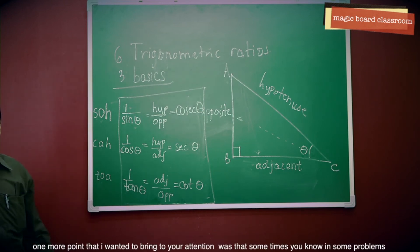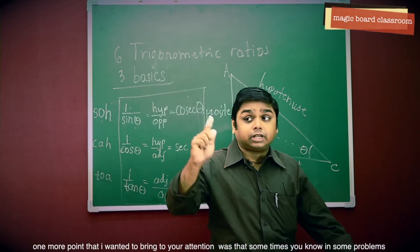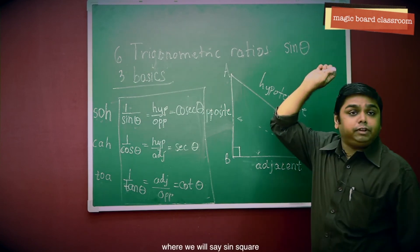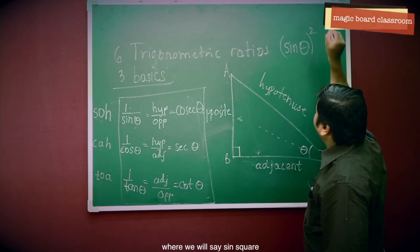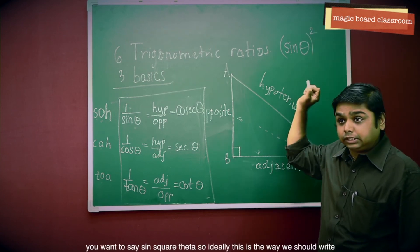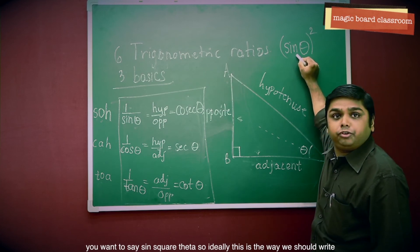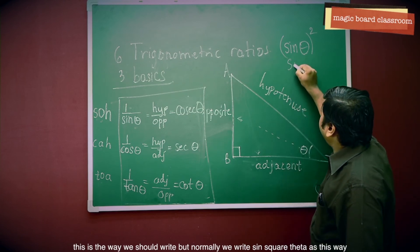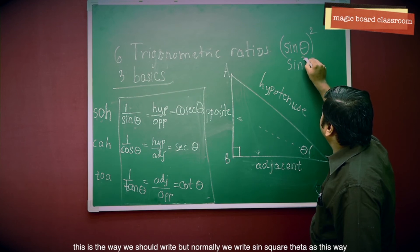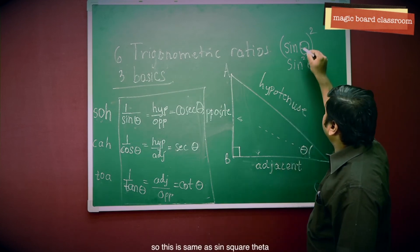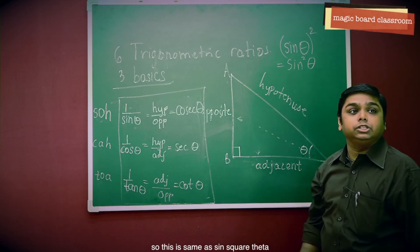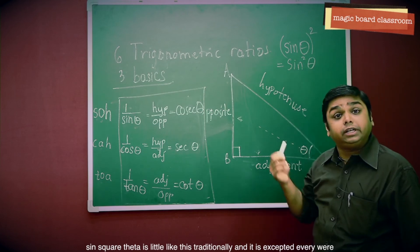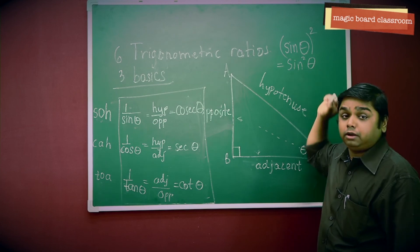One more point I wanted to bring to your attention: sometimes in problems we will encounter sine squared theta. Ideally we should write it as sine of theta, raised to the power 2. But normally we write sine squared theta in the traditional shorthand. This traditional notation is accepted everywhere and means the same thing as sine squared theta.